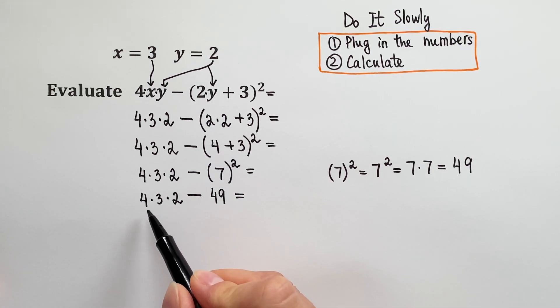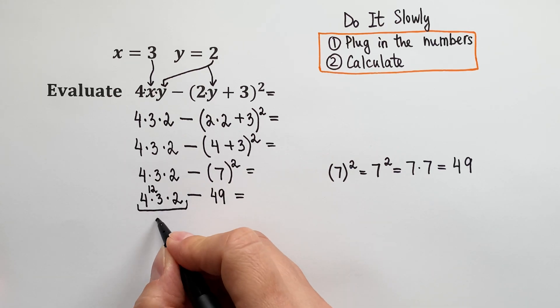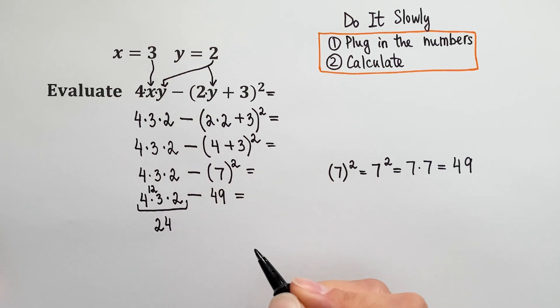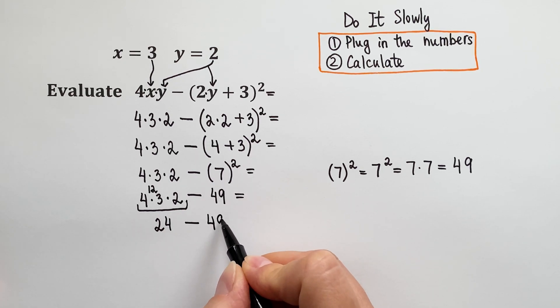We can take care of this multiplication. 4 times 3 is 12, and then times 2 is 24. Very good. So we have 24 minus 49.